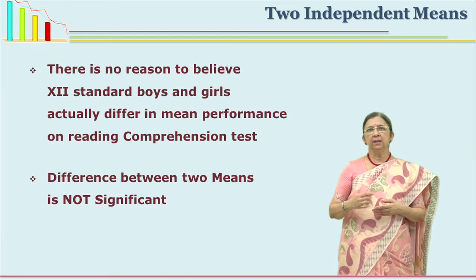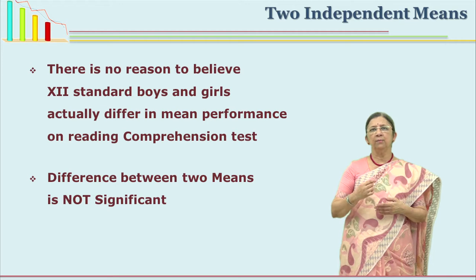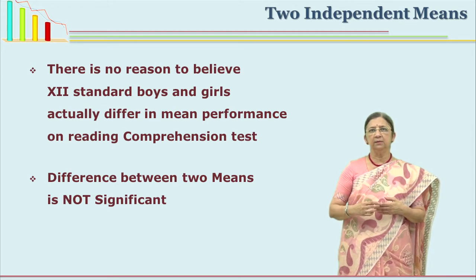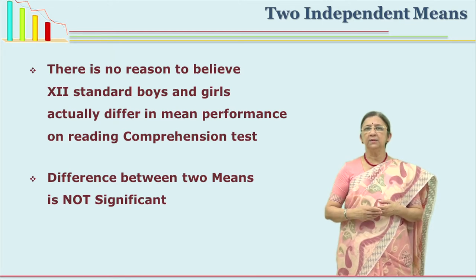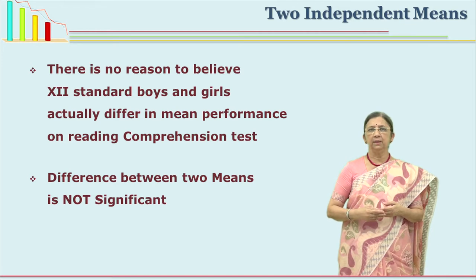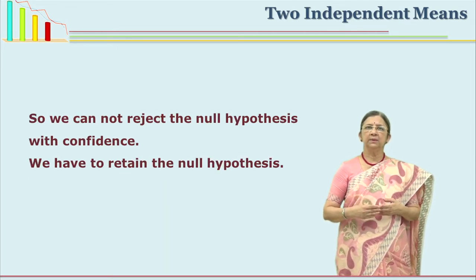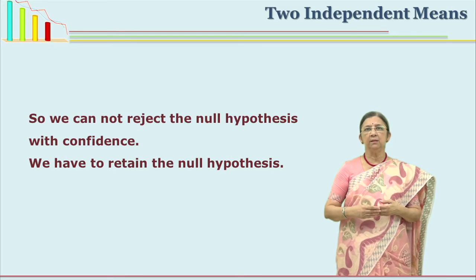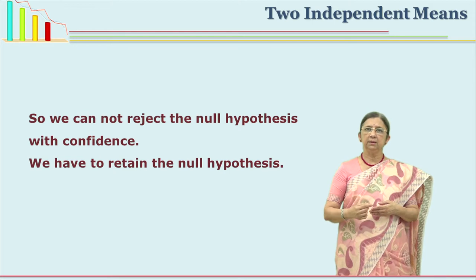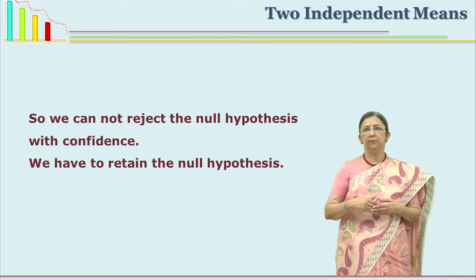We have seen that there is a difference in score of boys and girls reading comprehension which is 1.71, but this is really not significant because it is not significant at 95% or 99% level. So can we reject the null hypothesis? We cannot reject the null hypothesis. But do we have to accept it? No. We have already seen that null hypothesis can only be disproved or rejected. We have to retain this null hypothesis.